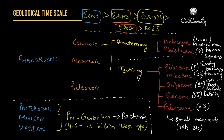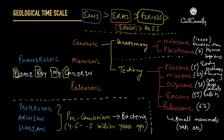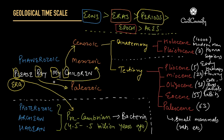We are in the Holocene epoch, which is part of the Quaternary period, which is further part of the Cenozoic era, and the Cenozoic era is part of the Phanerozoic Eon. Now you have seen all the classification, features, and how to remember them. Here are some mnemonics. The first one is: 'Please Pay My Children.' P for Precambrian, Pay for Paleozoic, M for Mesozoic, and C for Cenozoic — this is how you can remember the various eras.